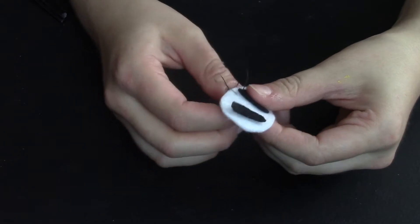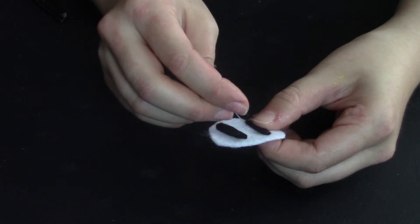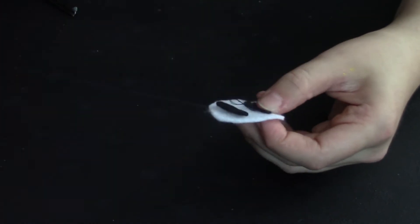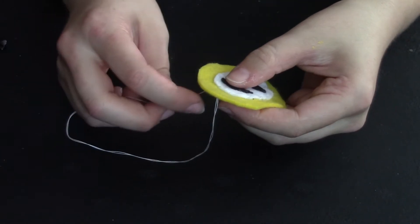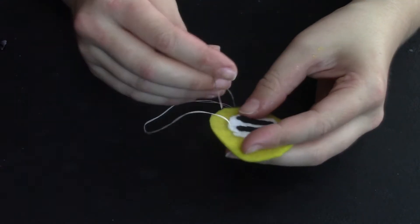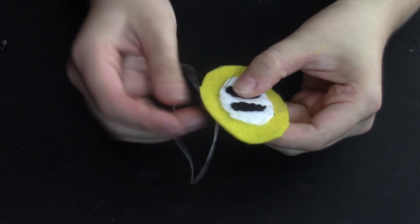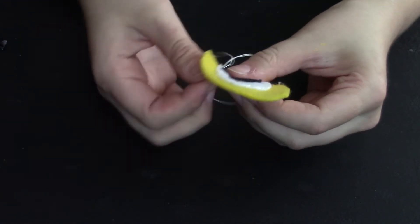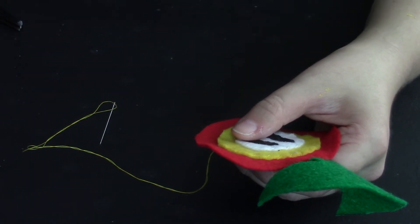Next, take some black thread and sew on the eyes. With white thread, sew the white circle to the yellow circle. Next, use yellow thread to sew the yellow circle to the red circle.